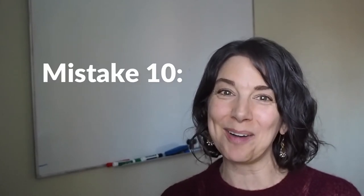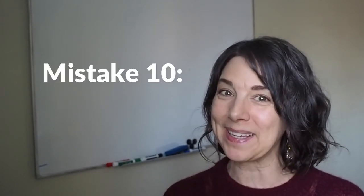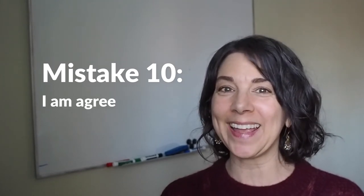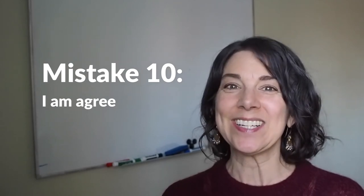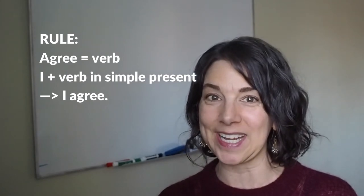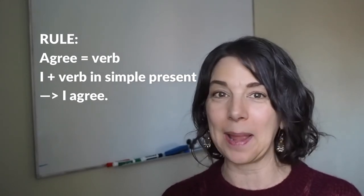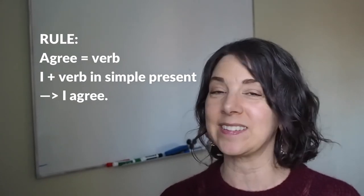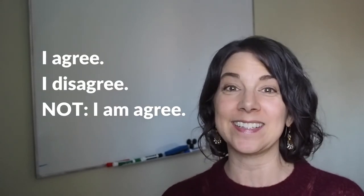Finally, number 10. This is a common mistake and it's actually a pretty basic one. But for some reason, it is so common. I am agree. This is a really common thing to say to show that you agree with someone. But agree is the verb. So we say, I agree. I am agree or I'm agree does not exist. So don't use it. I agree. The same thing with disagree. I disagree.